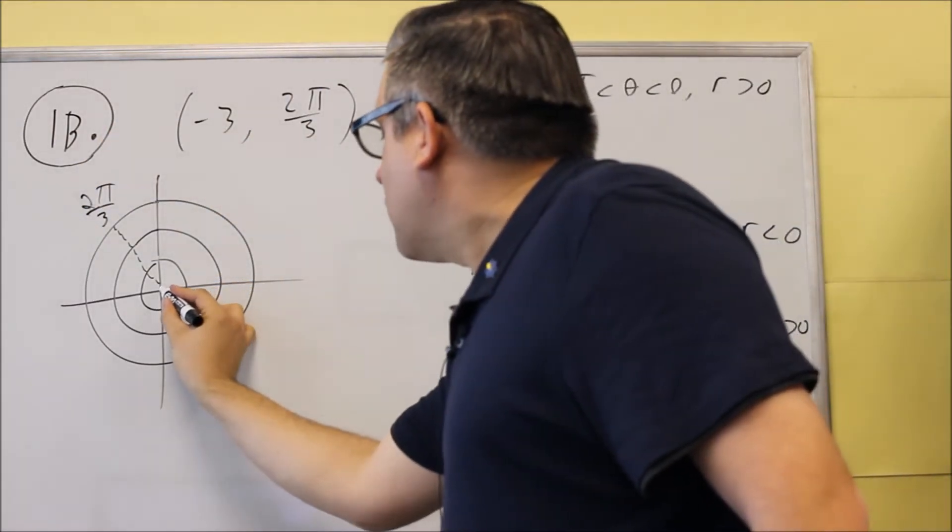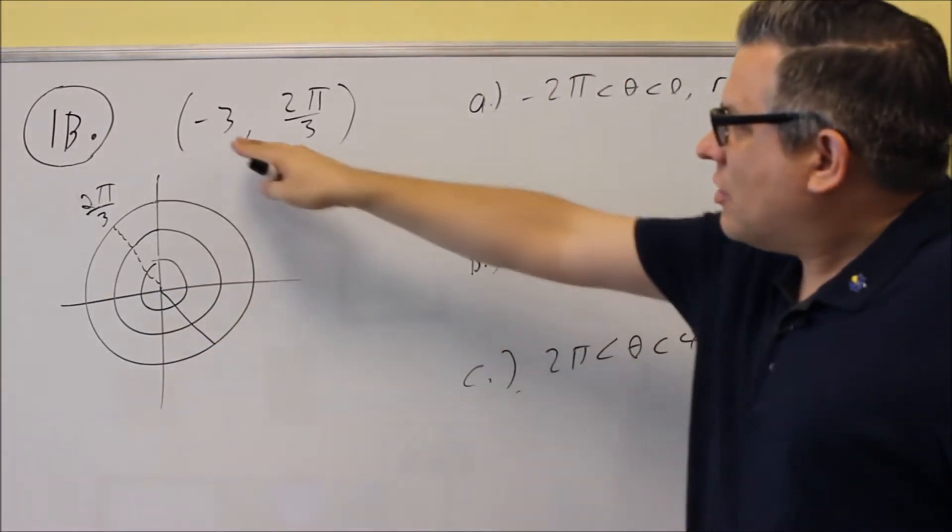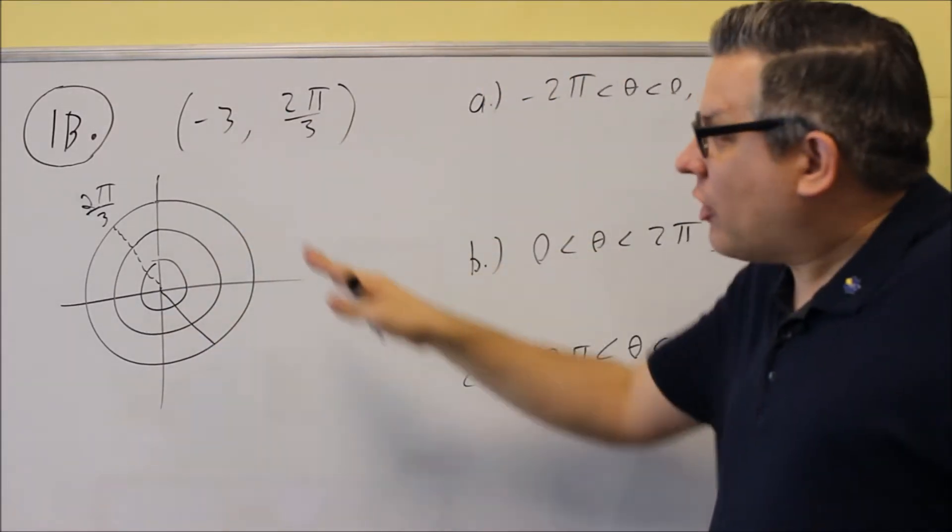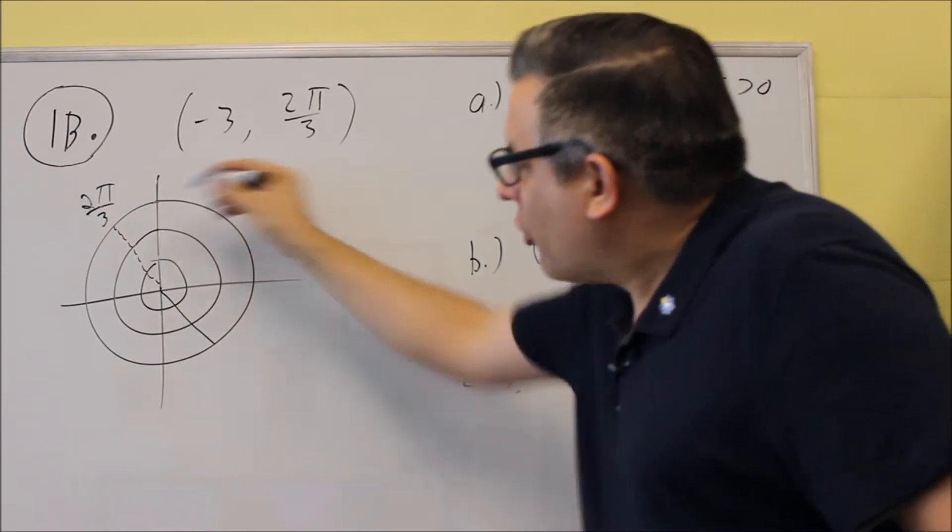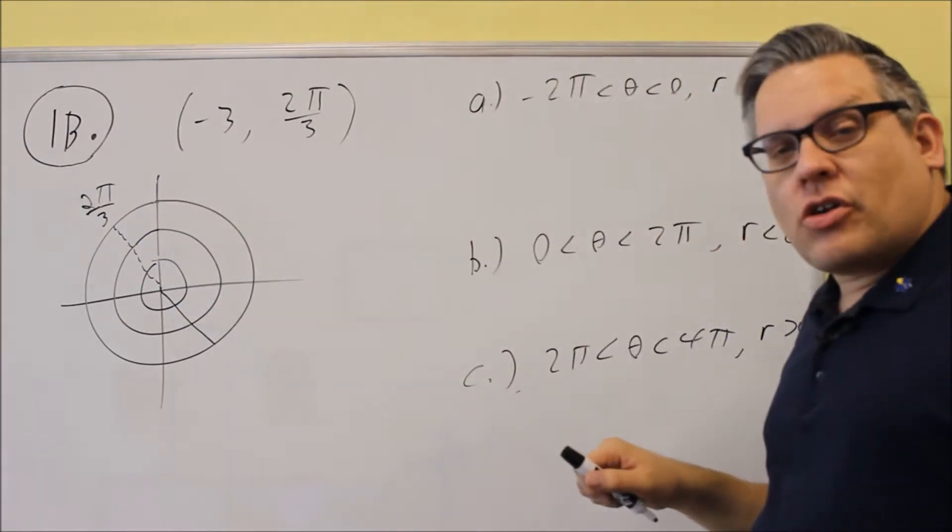We're going to reverse this opposite 180 degrees in the other direction because the r is negative. So whenever r is negative, we go to that angle, we make that a dotted line here, we reverse it 180 degrees in the other direction,